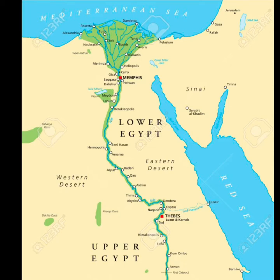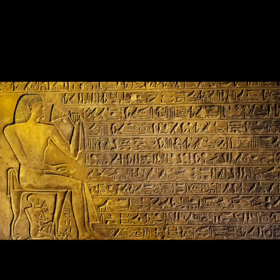The Egyptian temples and pyramids that we know about are on the Nile. The Nile is the longest river in Africa, and you can see it kind of looks like a flower. The ancient Egyptians used a language called hieroglyphics, which they used to write.